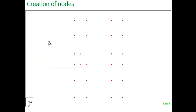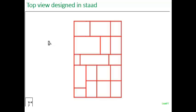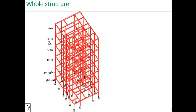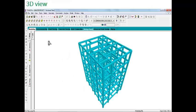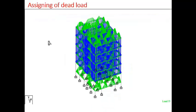This is the figure showing how to create nodes in STAAD. This is the top view design in STAAD. This is the picture of the whole structure after generation of the model using STAAD — that comprises of a G plus 4 building. This is the 3D view of the structure created in STAAD. This is the assigning of dead load, where all the green color indicates the slab load and blue color indicates the wall load.